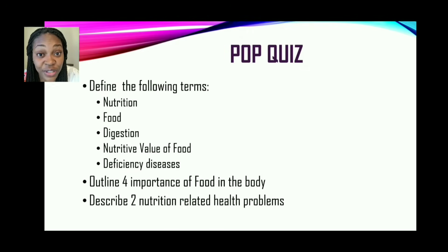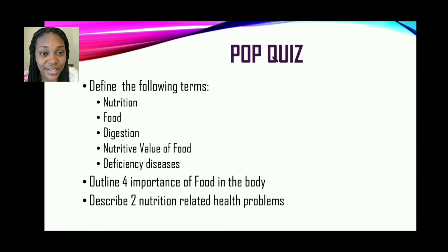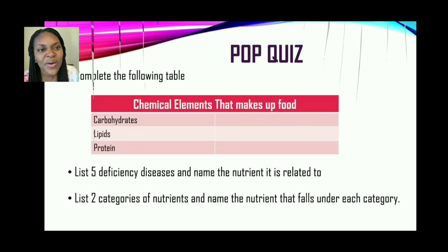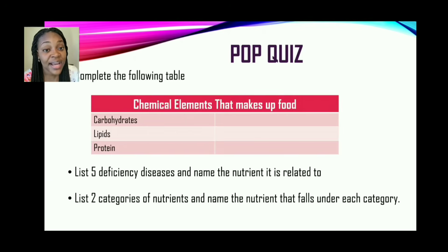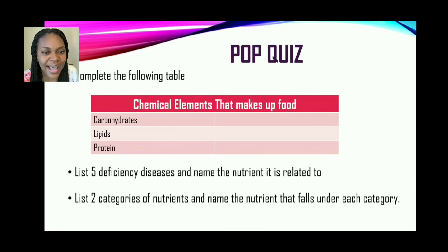Pop quiz — based on what we have just discussed, you should be able to answer these questions: define the following terms — nutrition, food, digestion, nutritive value of food, deficiency diseases; outline four importance of food in the body; describe two nutrition-related health problems; complete a table showing which chemical elements make up carbohydrates, lipids, and protein; list five deficiency diseases and name the associated nutrient; and list the two categories of nutrients and name the nutrients that fall under each category.